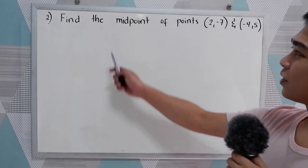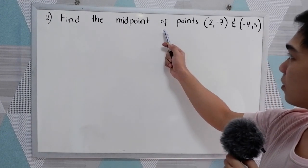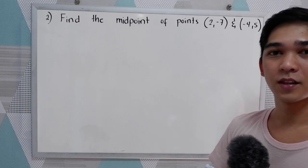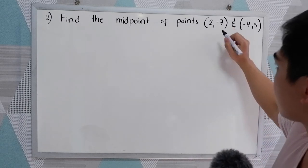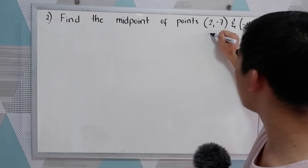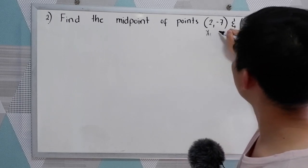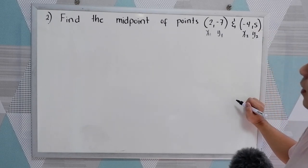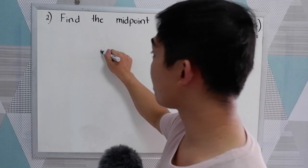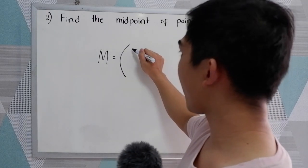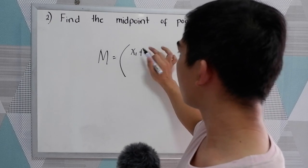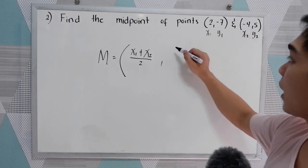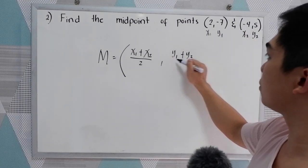Our second example: find the midpoint of points 2, negative 7 and negative 4, 5. So let us label our given points. This is our x sub 1, y sub 1, and x sub 2, y sub 2. Our midpoint formula for x: x sub 1 plus x sub 2 all over 2, and for y: y sub 1 plus y sub 2 all over 2.